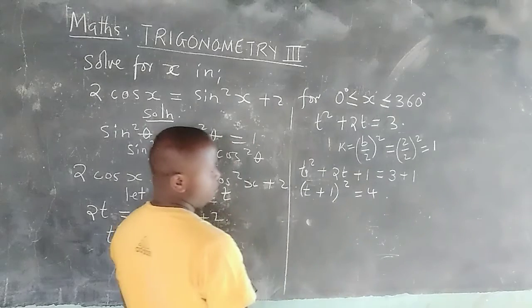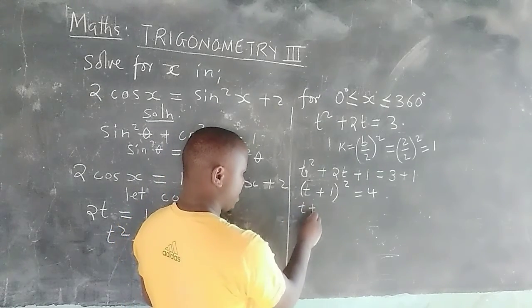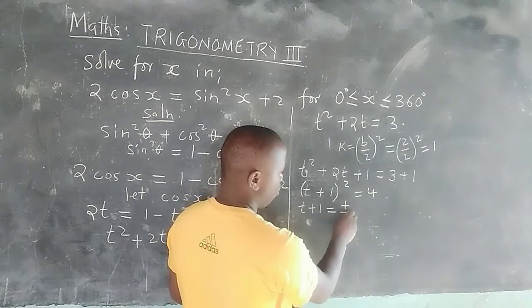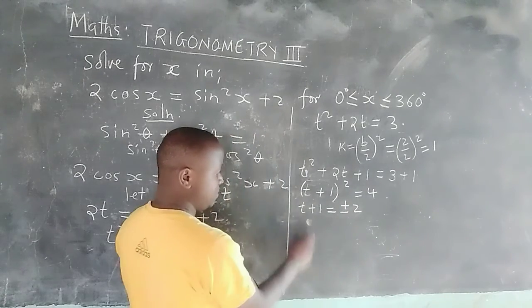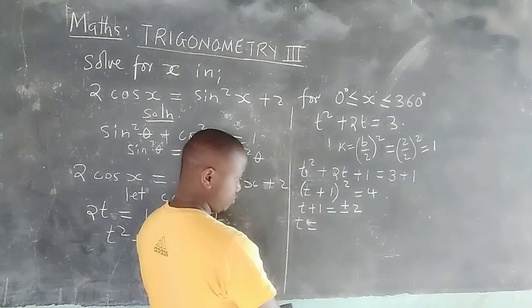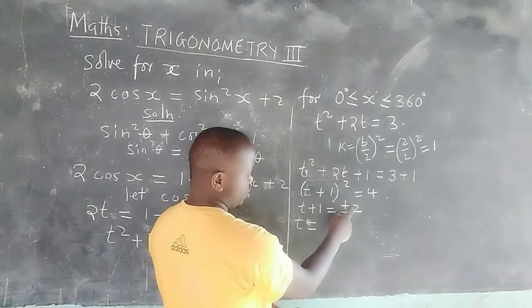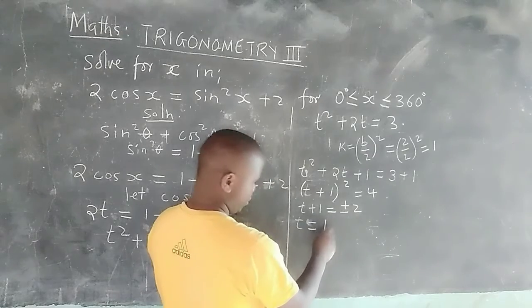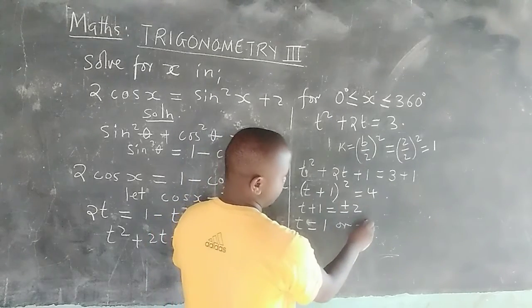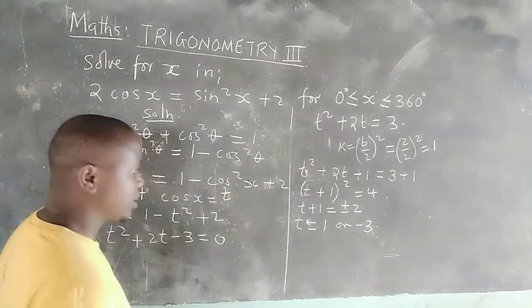Taking the square root of both sides gives t + 1 = ±2. Therefore, t = 2 − 1 = 1, or t = −2 − 1 = −3.